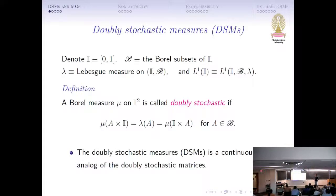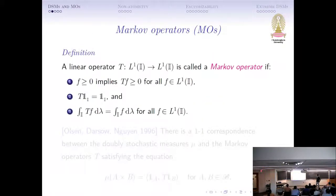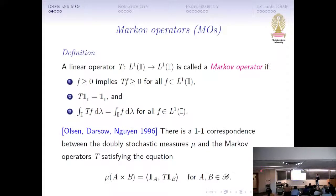You can think of this as a continuous analog of the doubly stochastic matrices. Now, because in my talk this measure — this DSM — will be factored, in order for me to define what it means by factorization of a product, I have to look at it from another point of view, as a Markov operator. A Markov operator is just a positive operator that maps the characteristic function on [0,1] to itself, and the adjoint of T also maps the characteristic function of [0,1] to itself. Recently — like 20 years ago — there is a one-to-one correspondence between this DSM and the Markov operator.